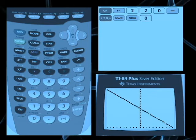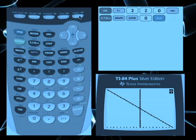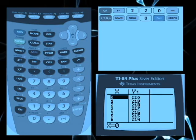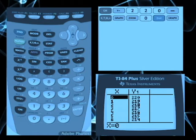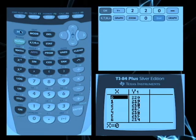Since you are going to create a data table, press the second key and select the table option. You'll see the x and y coordinates of the linear function in the x and y1 columns.